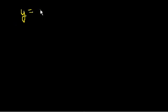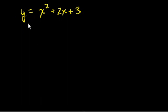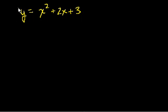If I had a function like y is equal to x squared plus 2x plus 3, in this situation the variable y is defined explicitly in terms of x. If you give me an x, I can just input it into this expression and I explicitly get y — it just pops out of the equation.